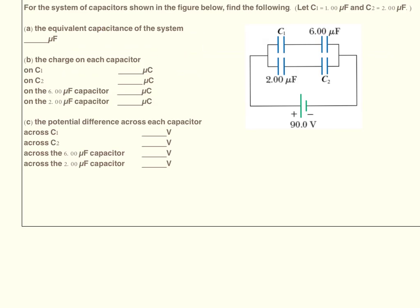For the system of capacitors shown in the figure below, find the following. Let C1 equal 1 microfarad and C2 equal 2 microfarads. A, find the equivalent capacitance of the system. B, the charge on each capacitor. And C, the potential difference across each capacitor.